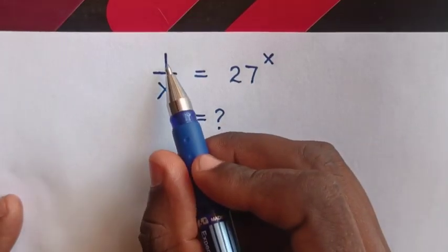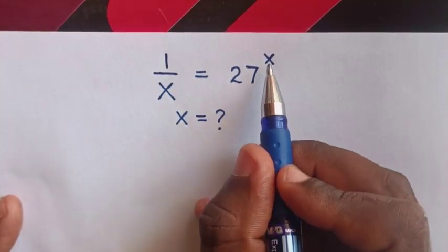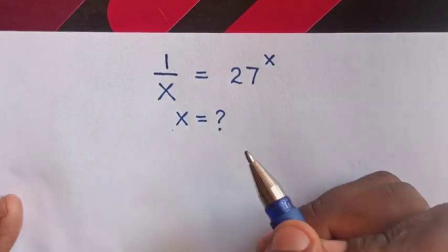Hello, how to solve 1 over x equals 27 to the power of x to find the value of x.